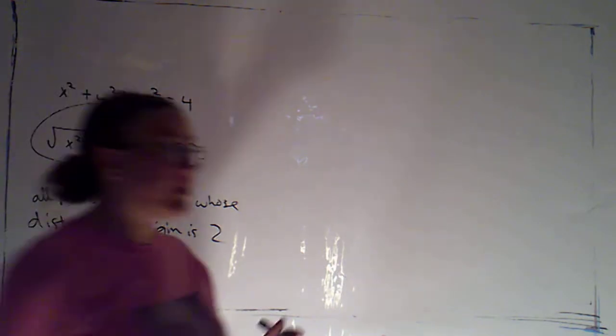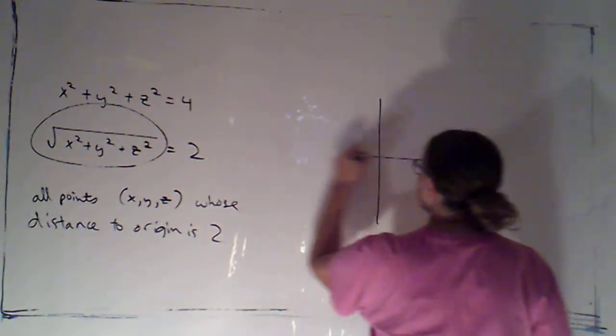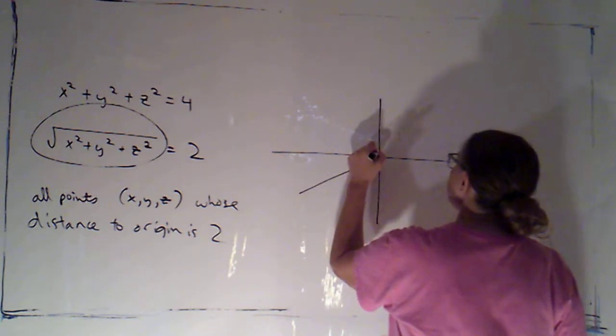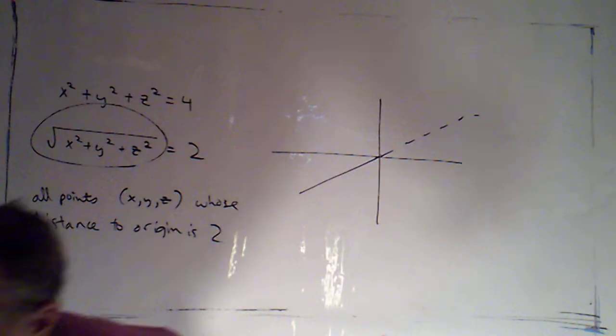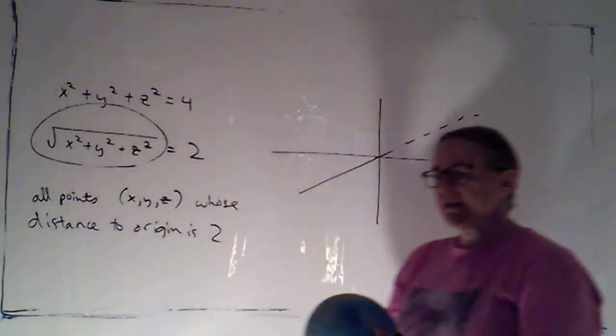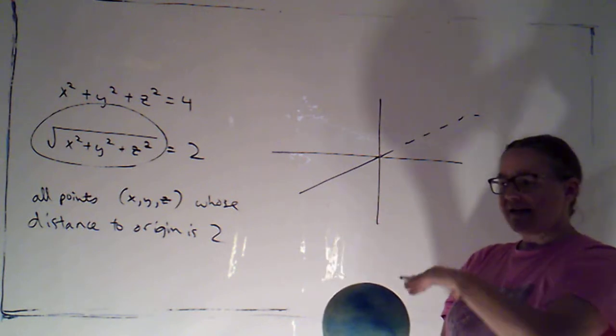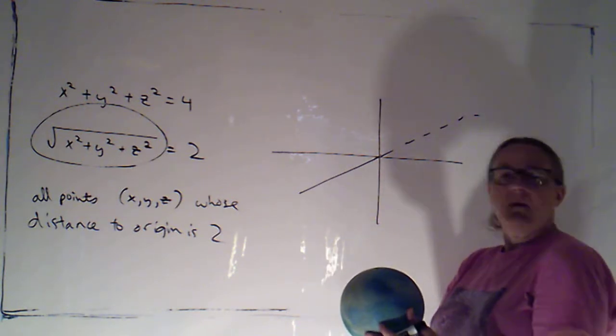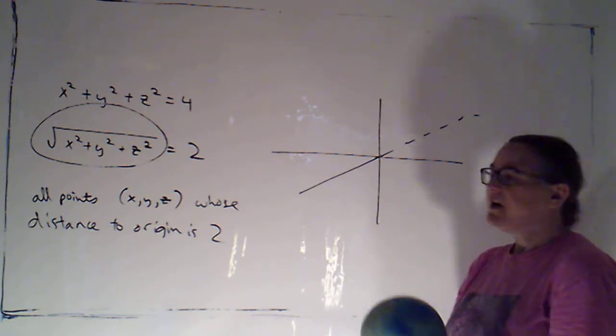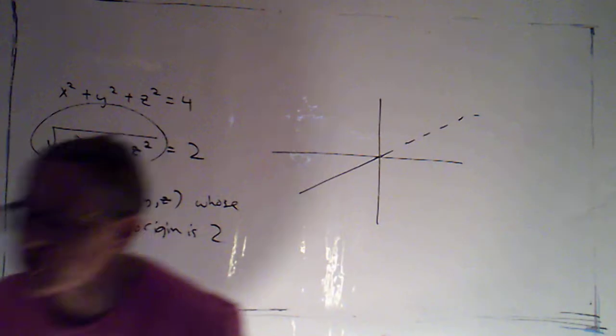So let's see how we would go about graphing something like that. So here are my axes. Now, nifty thing about a sphere is that if I look at the cross section that I would get of the sphere in any plane that I slice through it with, I'm always going to get a circle. So the intersection of this sphere with the coordinate planes is just going to be a circle.